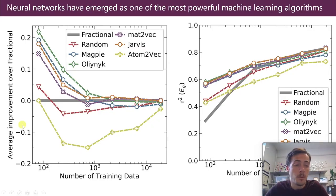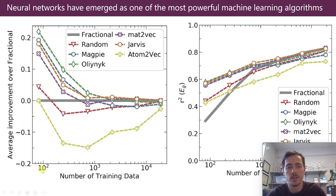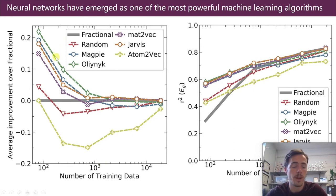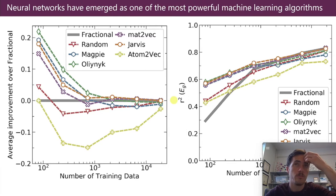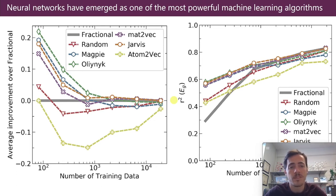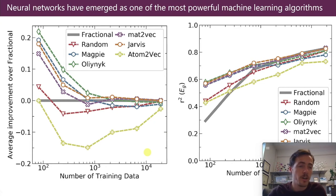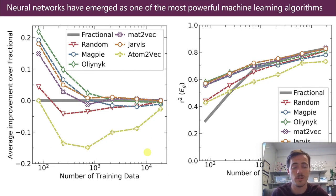If you remember our video previously where we talked about features, we said that features really matter, but they matter much more so in the limit of small amounts of data. If you only have 100 or 1,000 data points, adding these custom composition-based feature vectors — whether that's based on Oleanic, Mattovec, or whatever — these help you much more than random. But by the time you get to a large amount of data, they kind of stop helping. That's because if you give it enough examples and your model has enough tunable parameters, it can learn what to pay attention to without you having to tell it what the important features are. That's the idea behind deep learning.